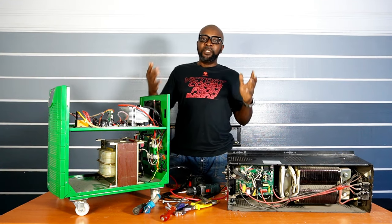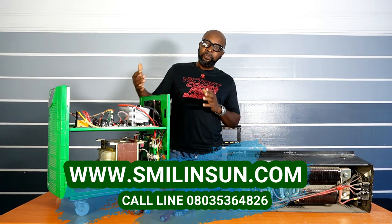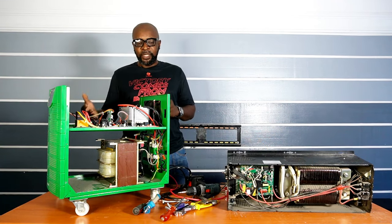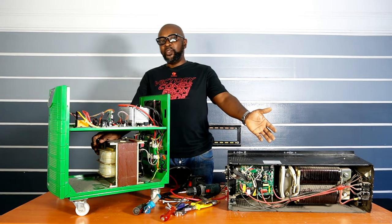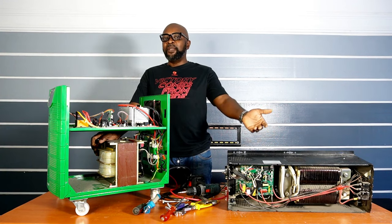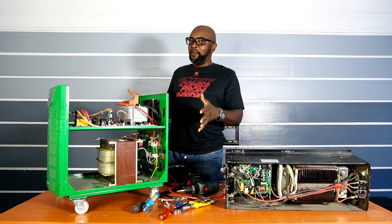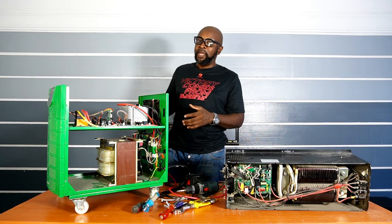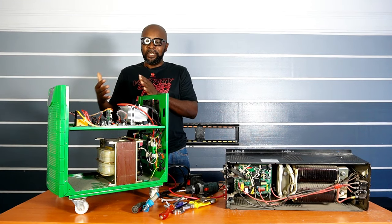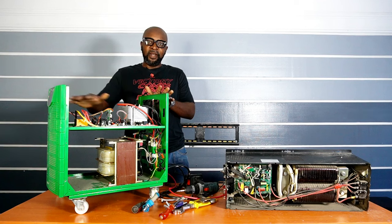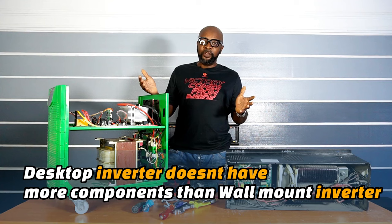It's pretty much the same thing — just the build differs. That's why I opened it up so we could all see. The transformer size here is pretty much the same as the transformer in the wall mount inverter because they have the same transformer ratings — neither is bigger than the other. This inverter being bigger on the outside does not mean it has more components; it's just the design and framework that creates all that extra space.